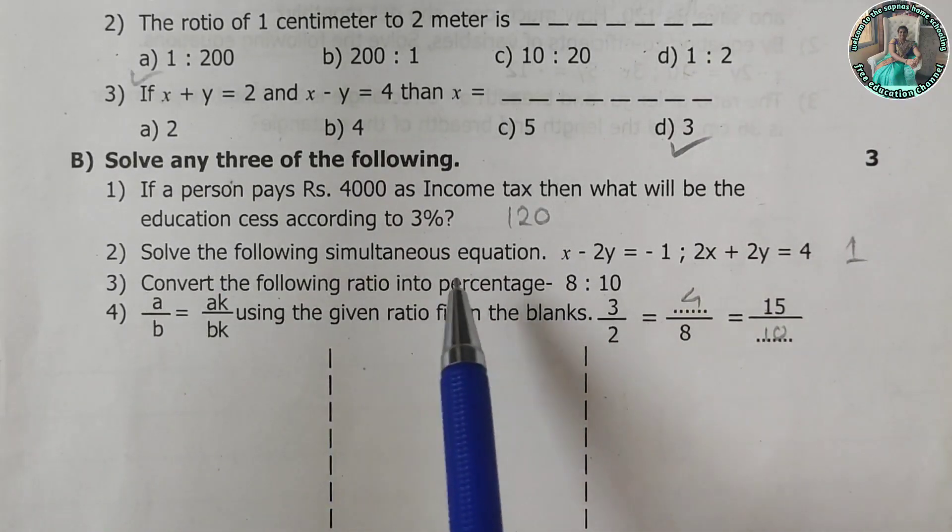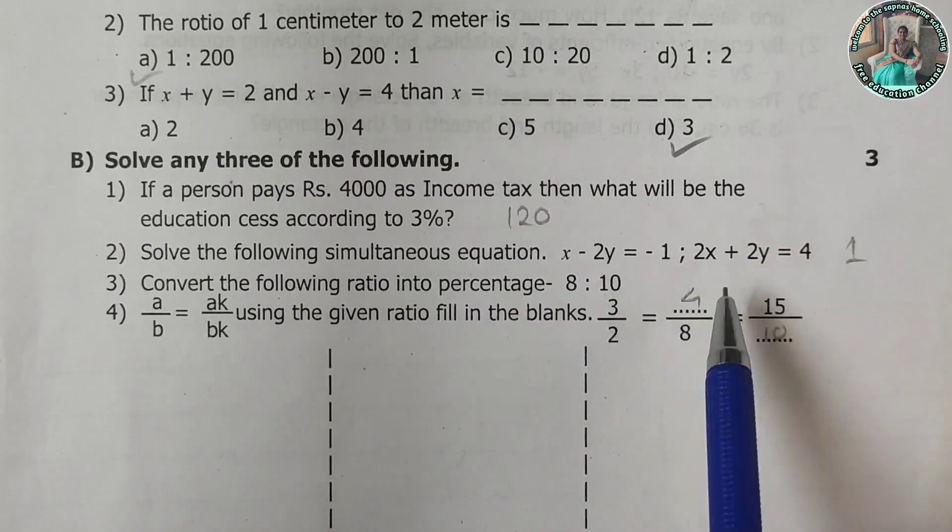Solve the following simultaneous equation. x minus 2y is equal to minus 1, and 2x plus 2y is equal to 4. The answer is 1.